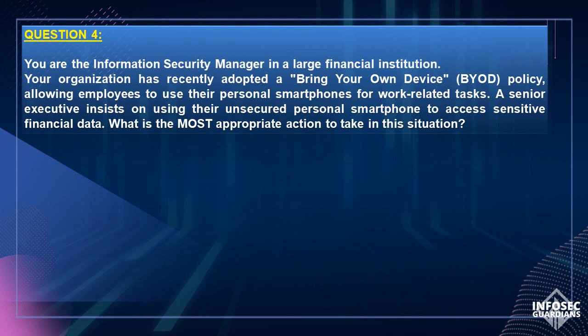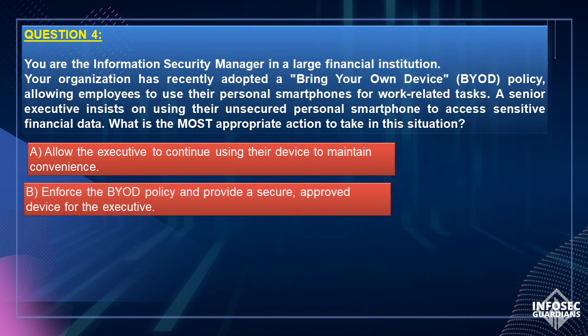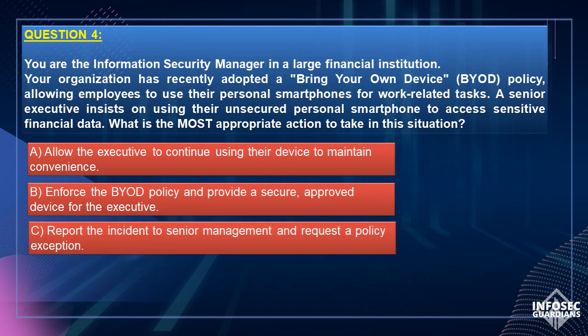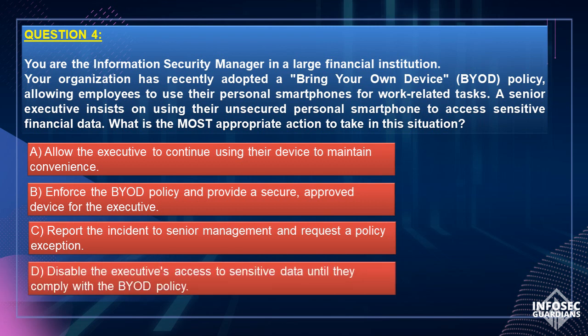Option A: Allow the executive to continue using their device to maintain convenience. Option B: Enforce the BYOD policy and provide a secure, approved device for the executive. Option C: Report the incident to senior management and request a policy exception. Option D: Disable the executive's access to sensitive data until they comply with the BYOD policy.